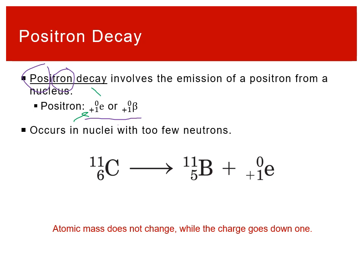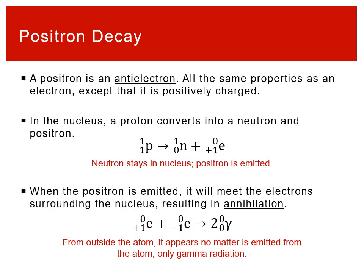In positron emission, this works just like the other decay types where you start with a parent nuclide, you make a daughter nuclide, and then there is the emitted particle. The total mass all balances out, and the total charge all balances out. Just like with beta decay, in positron emission the total mass doesn't change. What changes is the relative numbers of protons and neutrons.